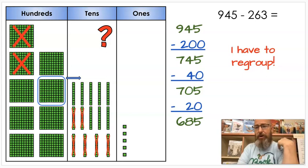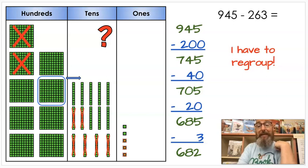Now, that was the hard part. Now I just have to subtract one more. My ones place is a 3. I'm going to cross out 3. I'm going to subtract it. And now I have a 2 in that ones place, which is 682, which means 945 minus 263 is 682.